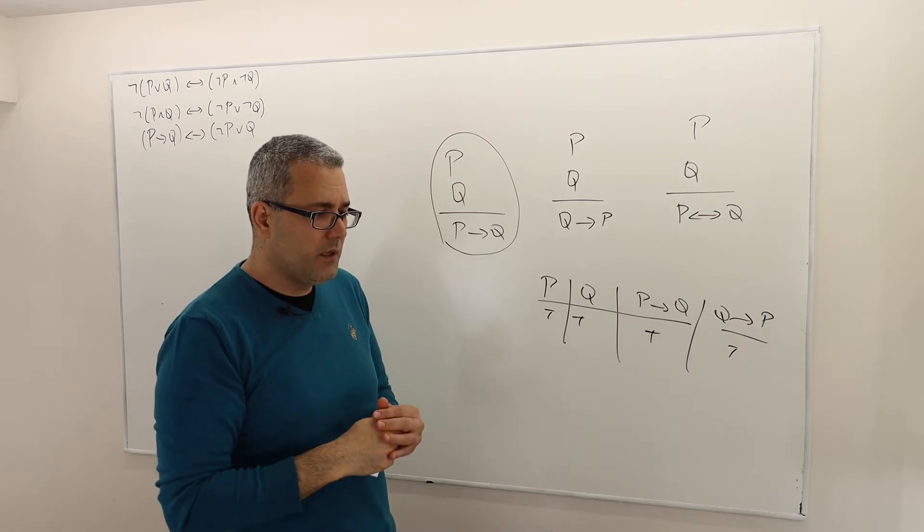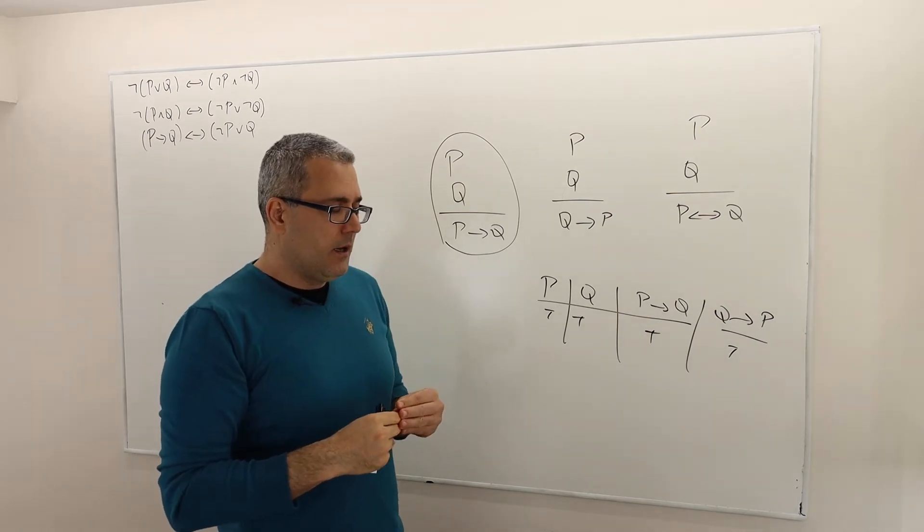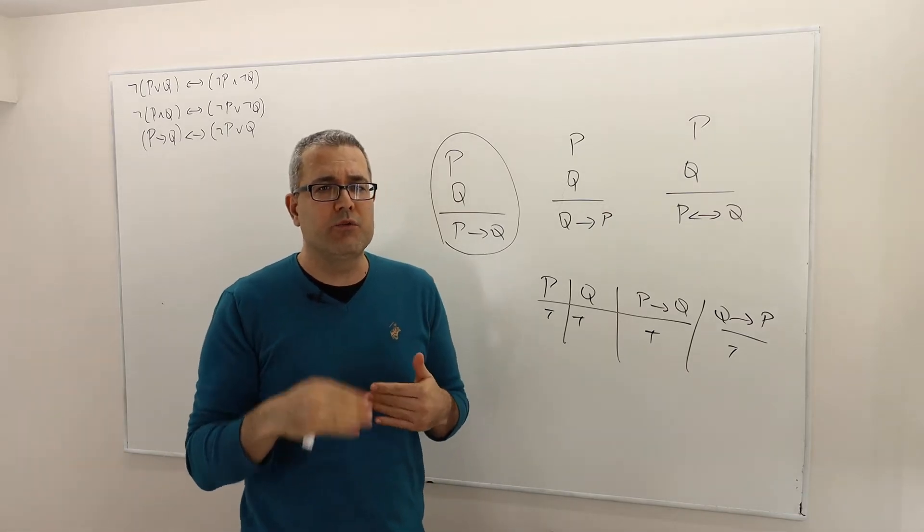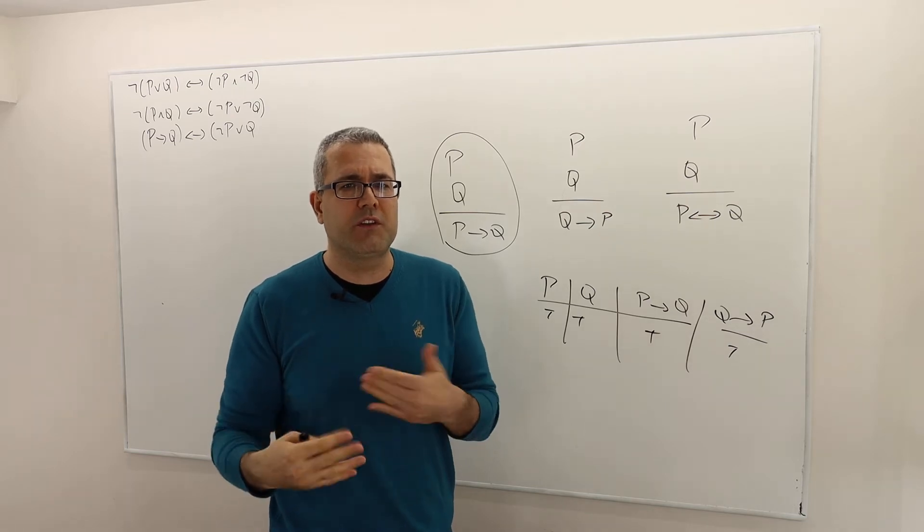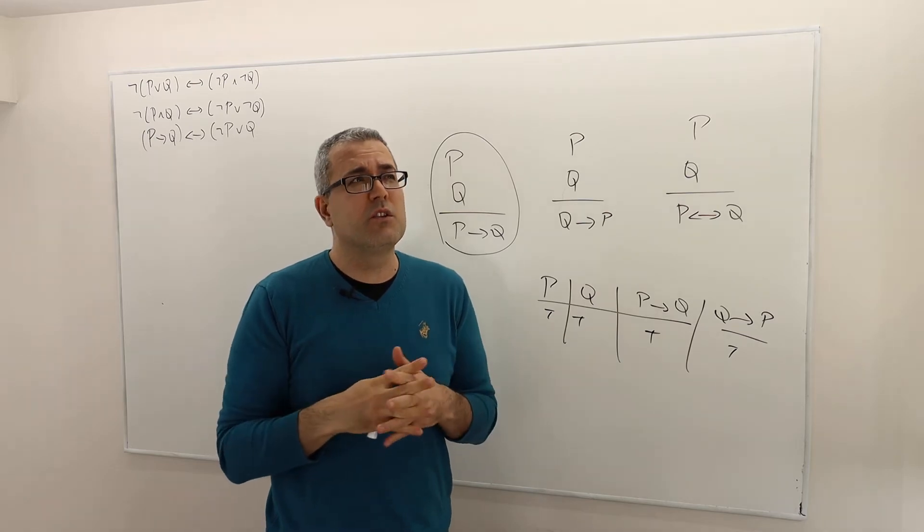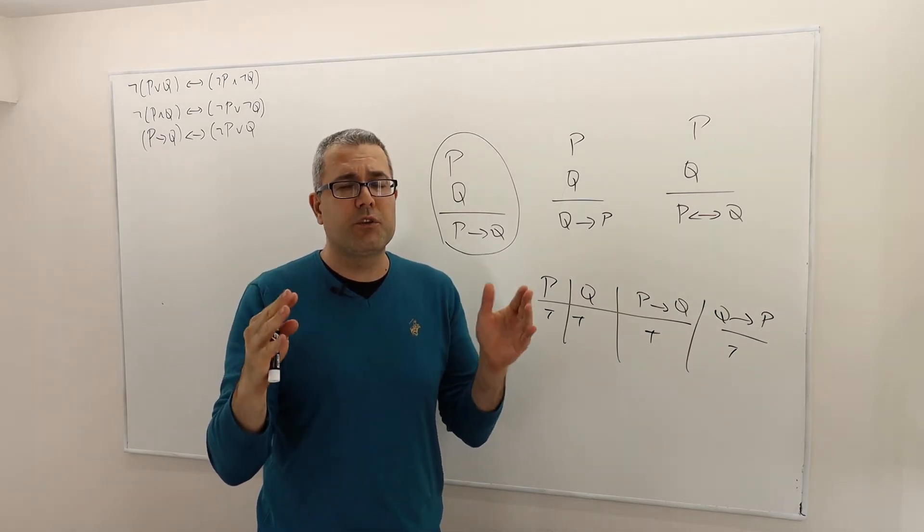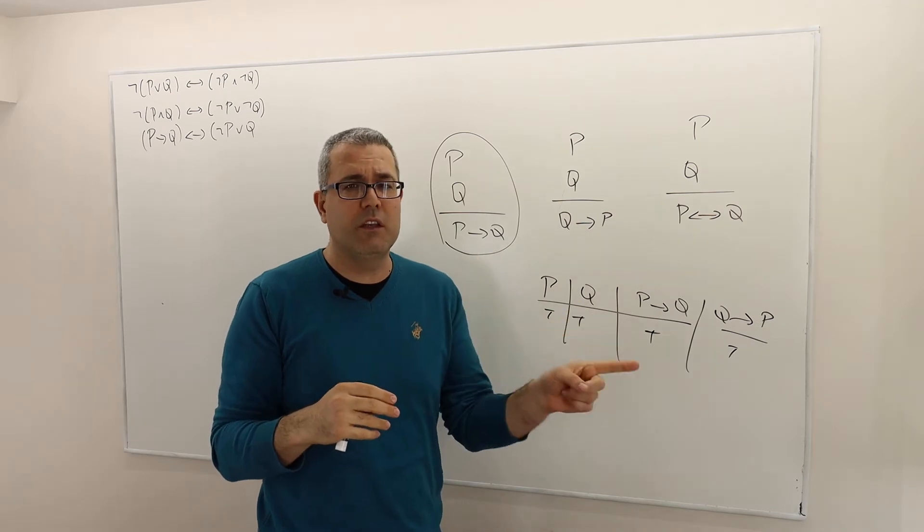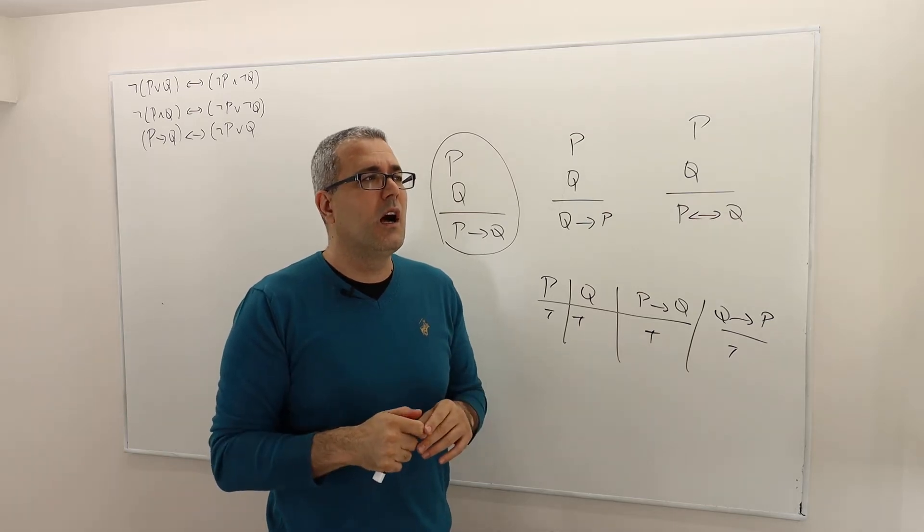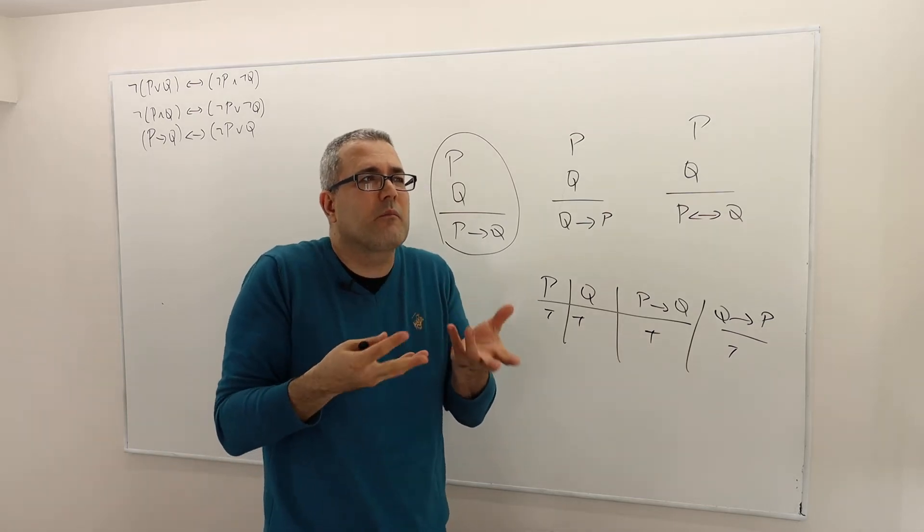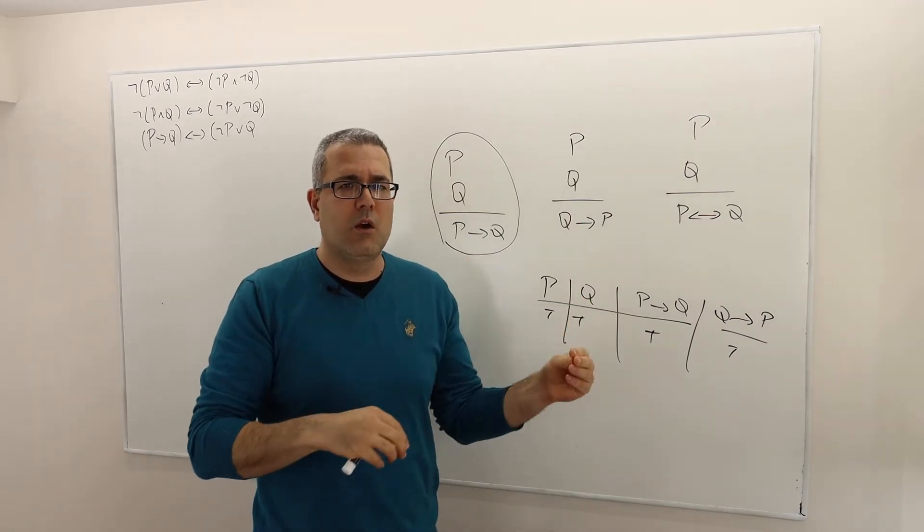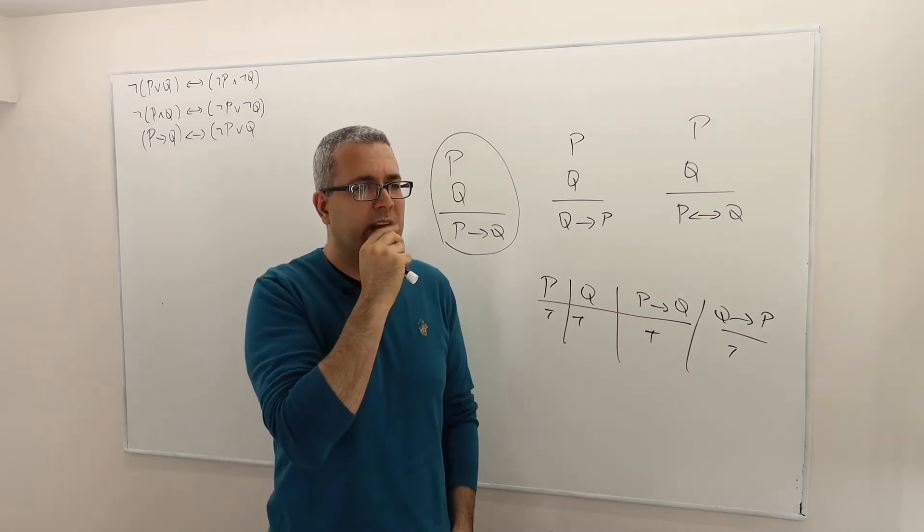So that was one question. The other question was, is there a way of understanding when we are going to use direct proof, when we are going to use indirect proof? It's hard to answer. There is no really sort of certain rules, like, you have to use this in that proof and something else in other types of proofs.